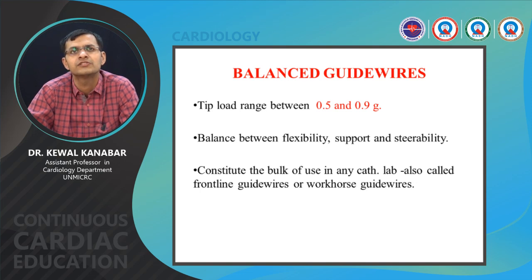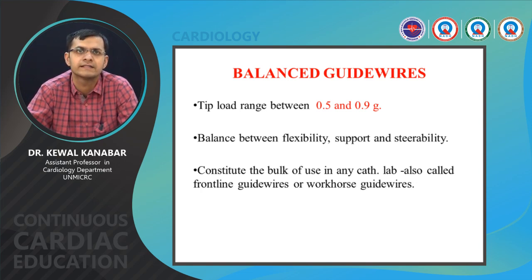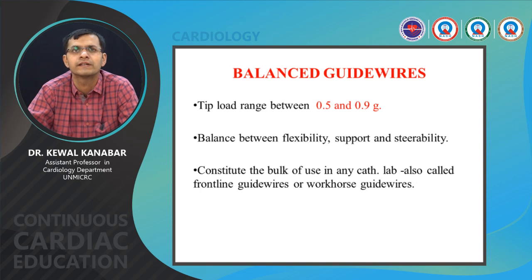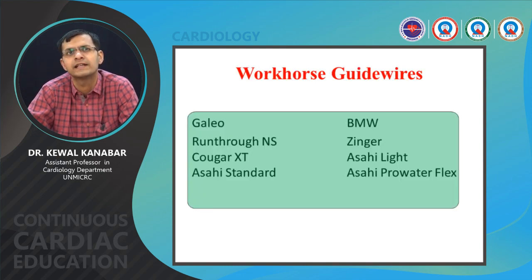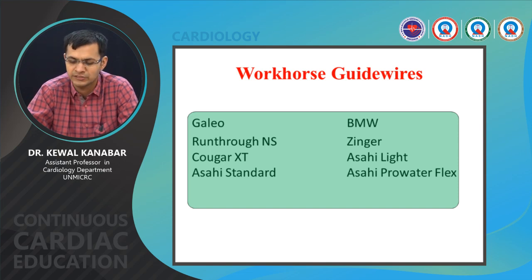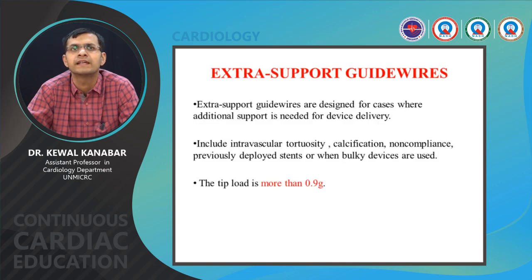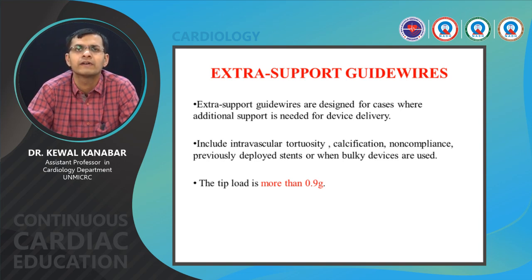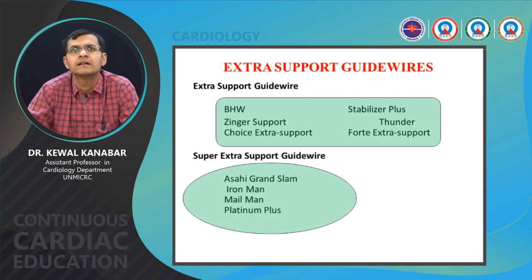Most routine workhorse wires are balanced guide wires with tip load ranging between 0.5 to 0.9 gram, offering an excellent balance between support, safety, flexibility, and steerability. Most lesions are crossed with workhorse wires. Commonly used workhorse wires include Galio, Run-Through, Sion Blue, BMW, and Zinger. Most frequently used throughout the country are the Run-Through wire, BMW wire, and in some centers the Sion Blue wire. Extra support wires are needed for difficult, tortuous, or calcified lesions where routine wires don't support balloon or stent passage.